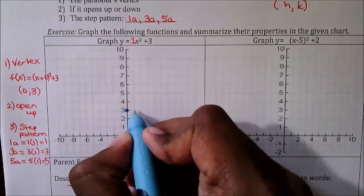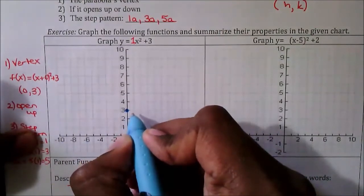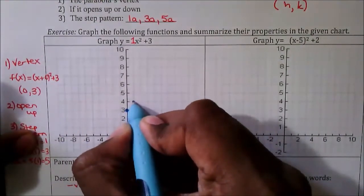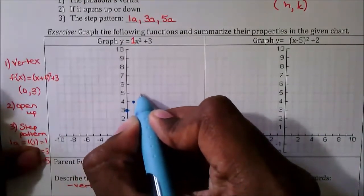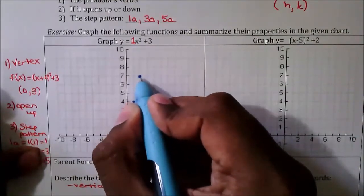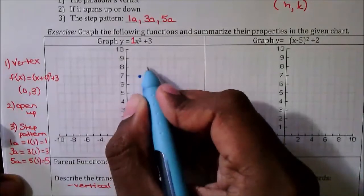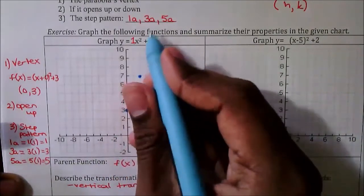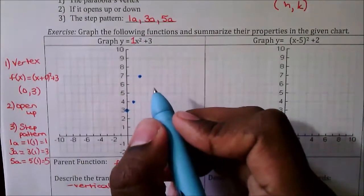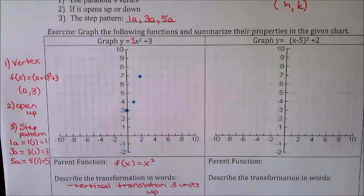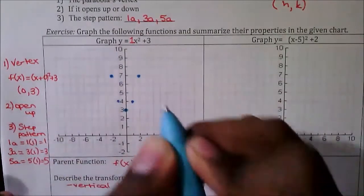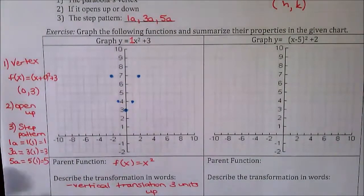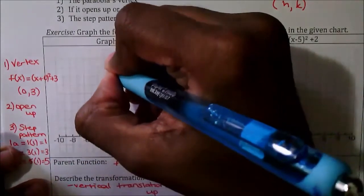The step pattern tells us how much to move up. We always move over one space; based on the first part of the step pattern we move up one as well. Then move over one — the next number is three, so move up three spaces. The next step is move over one and up five spaces, but there isn't enough space on the grid. A parabola is a mirror image, so we find the mirror images of these points. Once you have a minimum of five points, just connect the dots.